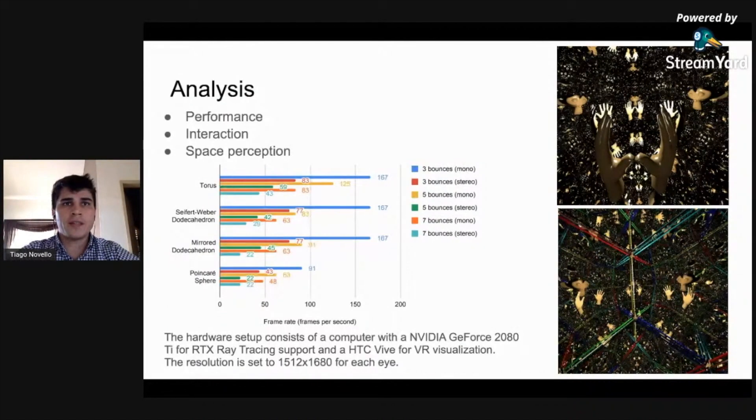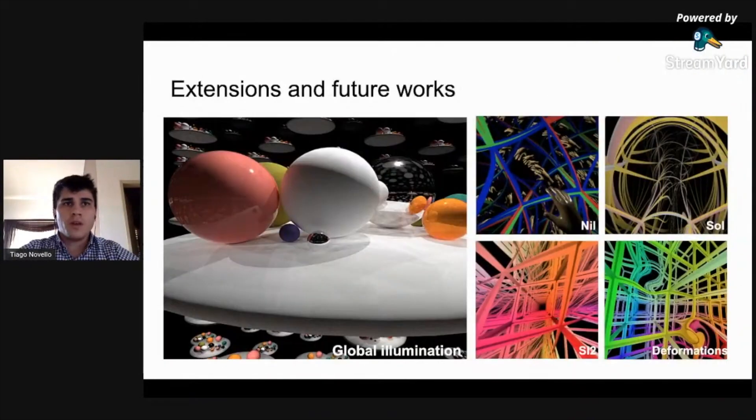We present the analysis of the results using our framework. This includes computational performance, interaction and space perception. The left side shows experiments to evaluate the performance of our algorithm in current VR devices. To give the user a better perception of the mirrored room, we attach models of the left and right hands to the left and right controls of the HTC Vive. We also add the edges of the fundamental domain to give a better perception of the space. Currently, we adopt only a local illumination model for shading.